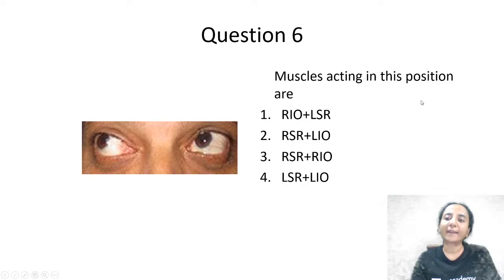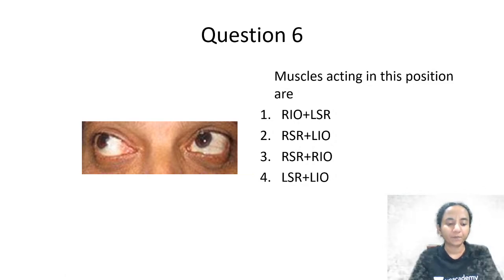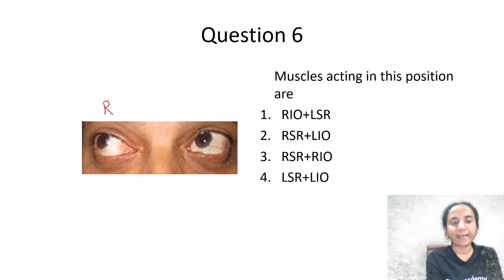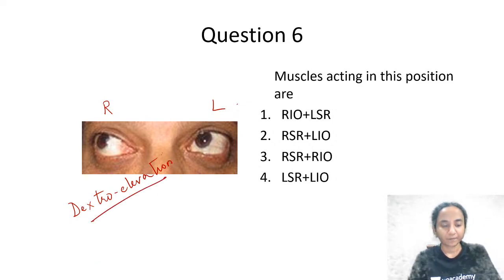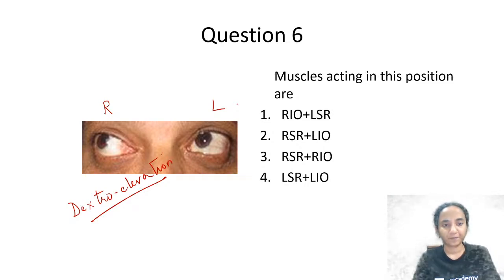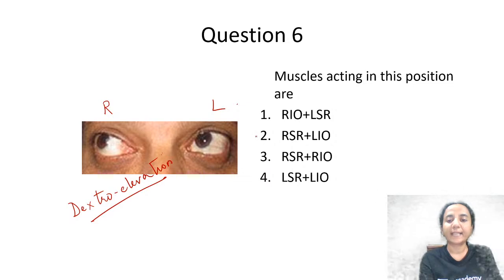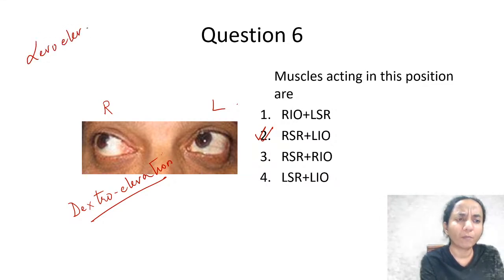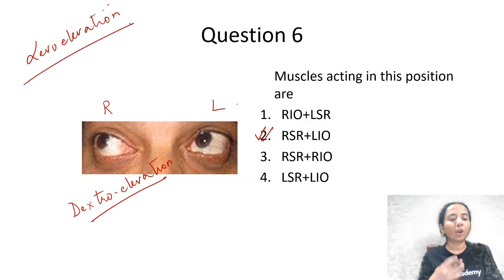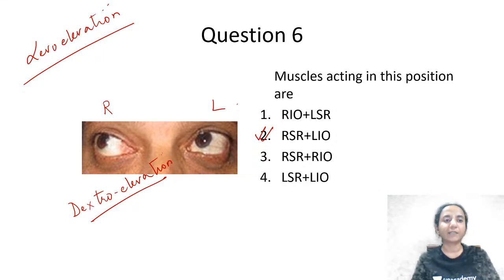What are the muscles acting in this position? We have to identify the yoke muscles. This is the right eye and this is the left eye. This position is dextro elevation — elevating the eye on the right side. The answer is right-sided superior rectus and left-sided inferior oblique.